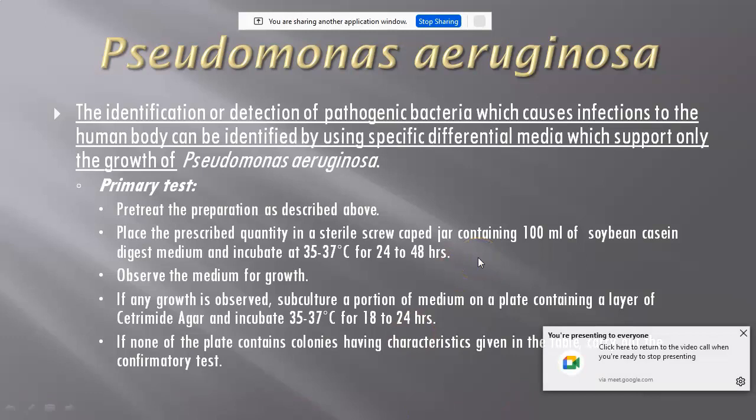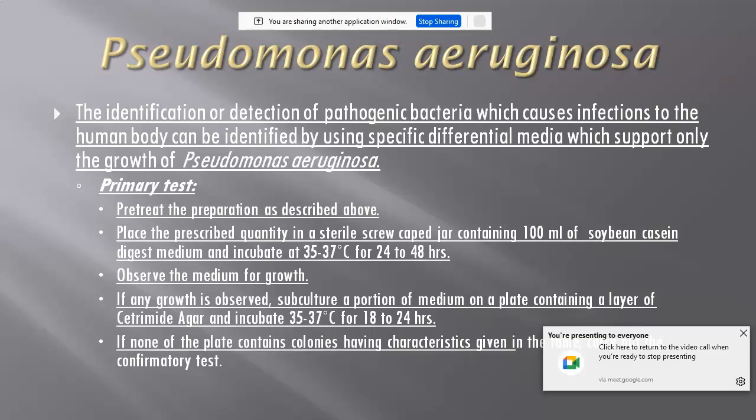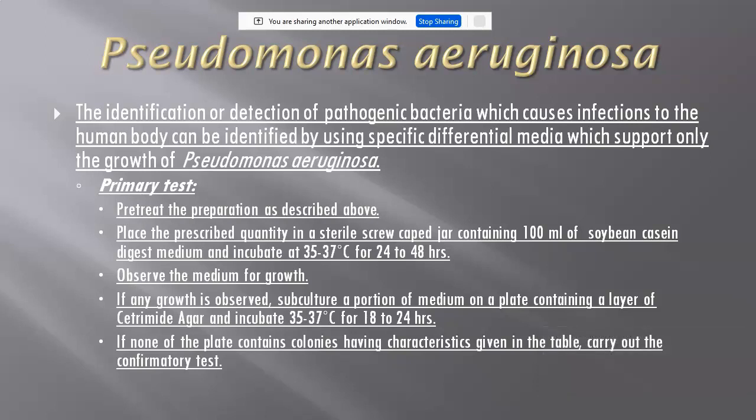The third test for detection of a specific microorganism is Pseudomonas aeruginosa. This is also a pathogenic bacteria that causes infections in the human body. Using specific or differential media, we can detect the presence or absence of Pseudomonas aeruginosa in the pharmaceutical product. Most pharmaceutical products are commonly contaminated with pathogens such as E. coli, Staphylococci, and Pseudomonas, and their presence is harmful to the product.